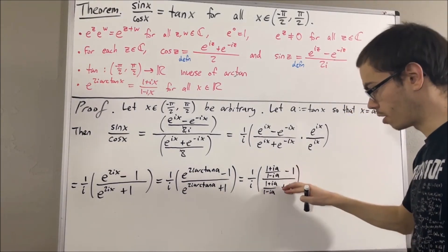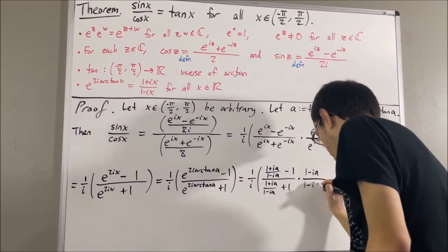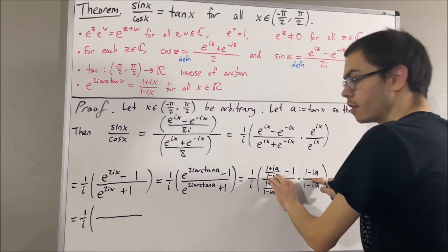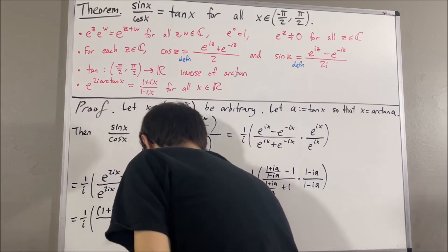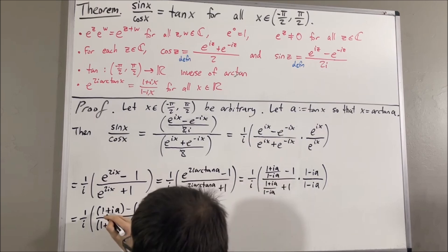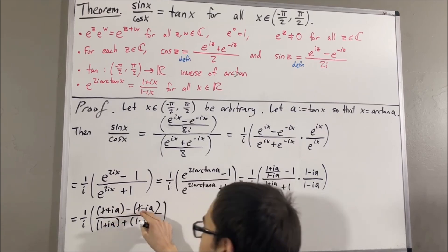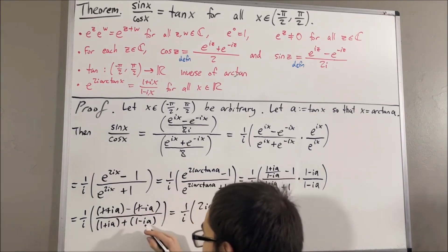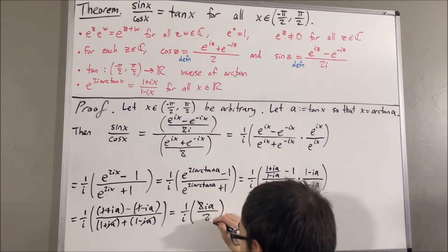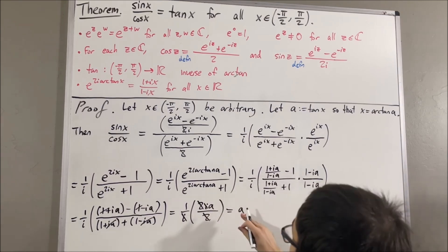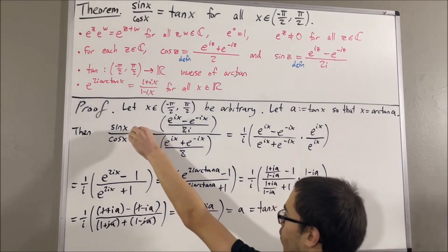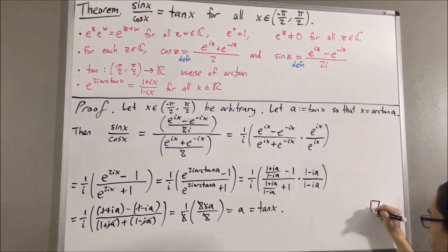Now we're going to multiply both the numerator and denominator by 1 minus ia. Distributing in the numerator gives 1 plus ia minus 1 minus ia, and in the denominator we get 1 plus ia plus 1 minus ia. In the numerator, the 1s cancel and we're left with ia minus negative ia, which equals 2ia. In the denominator, the ia terms cancel and we're left with 2. The 2s and the i's cancel, and we're just left with a. But a equals tangent of x. So we have shown that sine of x over cosine of x equals tangent of x, completing the proof.